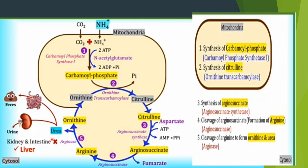The urea formed during the urea cycle enters the blood, and the kidneys filter and excrete it through urine. Alternatively, it may travel to the small intestine, where bacterial action breaks it down into free ammonium ions, which are then excreted through feces. This completes the five steps of the urea cycle.